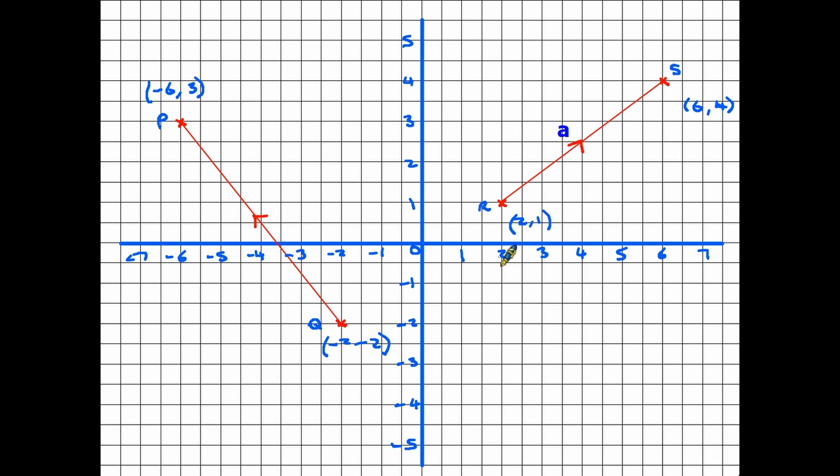We have point R, and I've written the coordinates here. It's at (2, 1). And we have point S which is at (6, 4). So the red line between them is the line that describes the vector, and the red arrow shows us the direction. The vector in this case is the movement from R up to S.